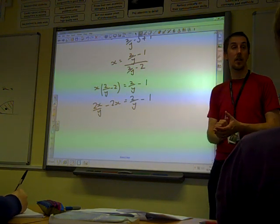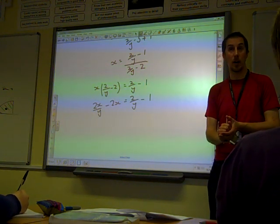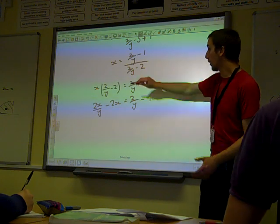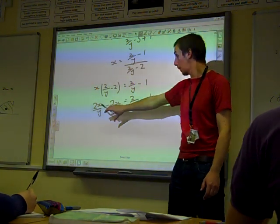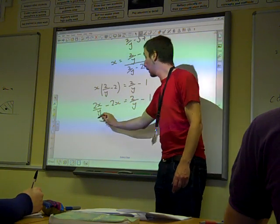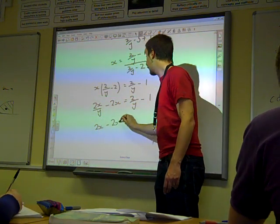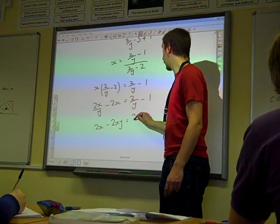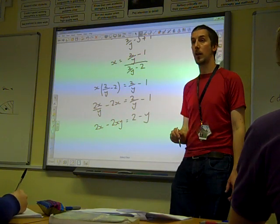We're aiming for an answer that doesn't involve fractions. We still have fractions in there. So having multiplied by the denominator there, we're now multiplied by the thing that's on the bottom again. Multiplied by y. Giving us 2x minus 2xy. Equals 2 minus y.